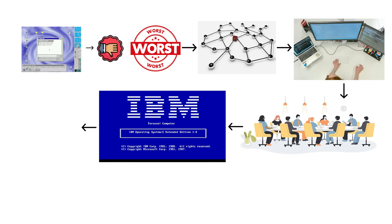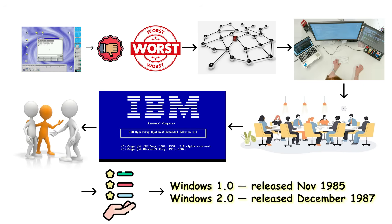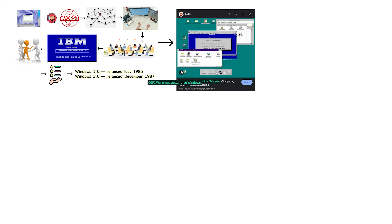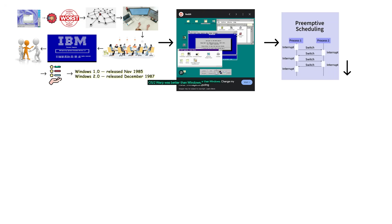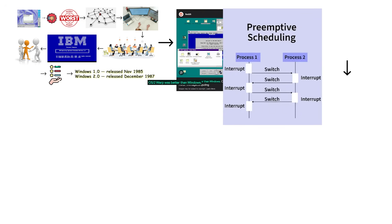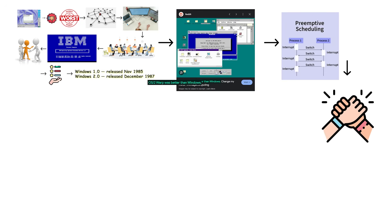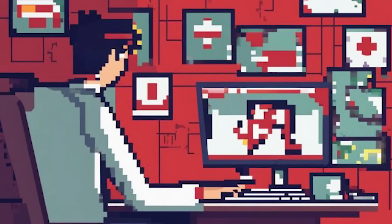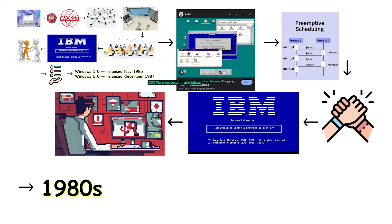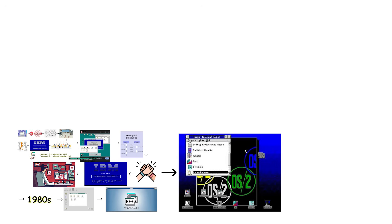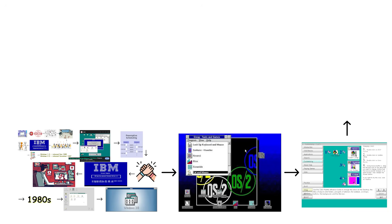IBM OS/2 introduced several features that were far ahead of early Windows. It supported true pre-emptive multitasking, which means the system could decide when a program had used enough CPU time, instead of politely waiting for the program to give control back. It also supported protected memory, preventing applications from corrupting each other. In the 1980s, that was practically sorcery, especially compared to Windows 3.0, where one misbehaving app could take the whole machine down with the enthusiasm of a collapsing Jenga tower.